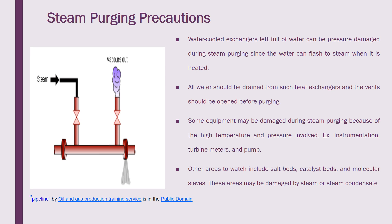While doing steam purging, we must clear 100% of the process fluid, operational fluid, or coolant fluid inside the tube or shell side of the heat exchanger. All water should be drained from the heat exchanger, and vents should be opened before purging. Some equipment may be damaged during steam purging and must be isolated - such as instrumentation, turbine meters, and pumps - and these must be isolated from the steam purging area.